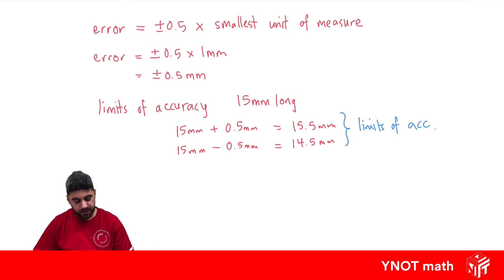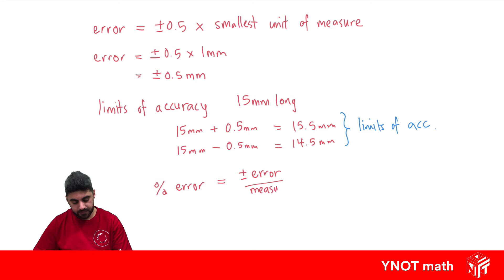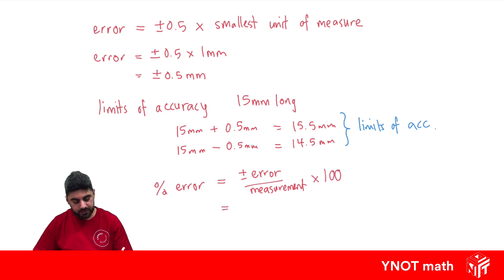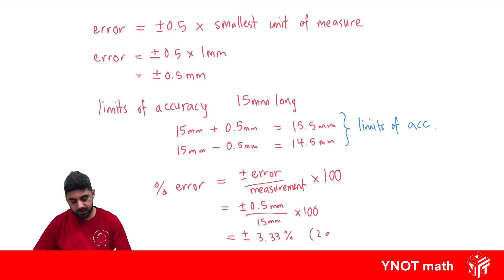We're also going to look at something called the percentage error. To work out our percentage error, it's just plus or minus our error divided by our measurement, multiplied by 100 to turn it into a percentage. For this example, our error is 0.5mm and the measurement is 15mm. Multiplying by 100 gives us a percentage error of plus or minus 3.33% to two decimal places.